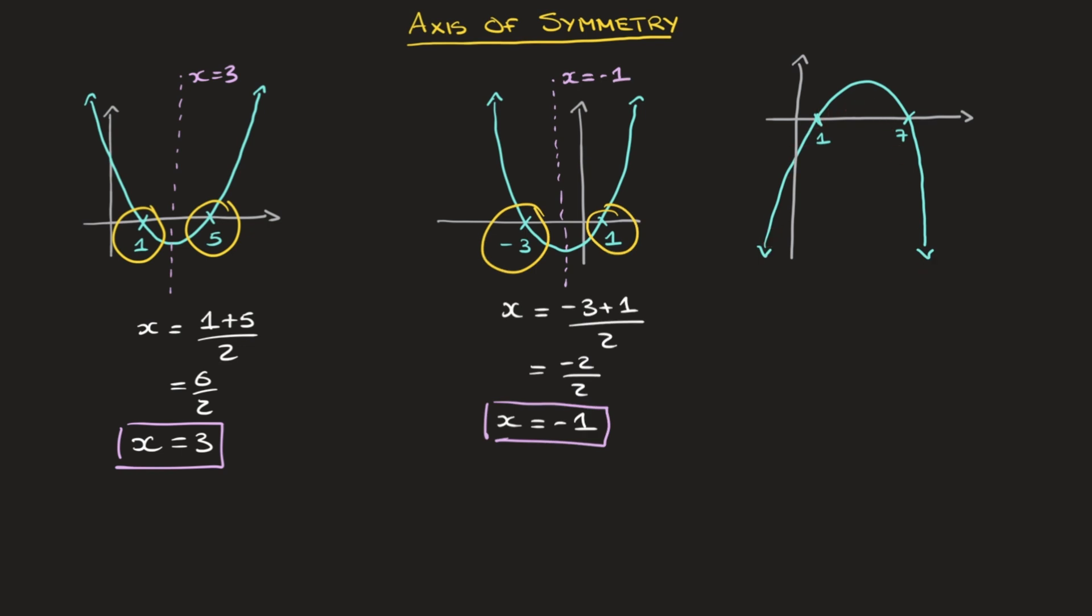this parabola crosses the x-axis at 1 and at 7. Without much effort, we can find the equation of the axis of symmetry. Its axis of symmetry has equation x = (1 + 7)/2, which equals 8/2. Finally, x = 4. I'll label the line x = 4.